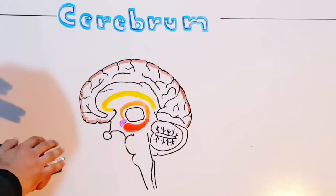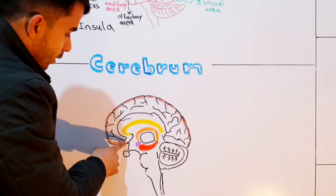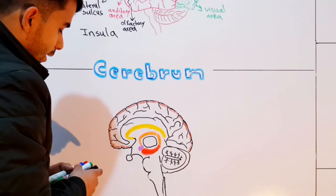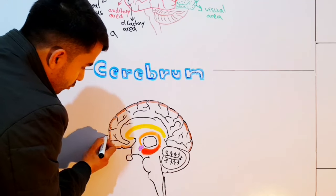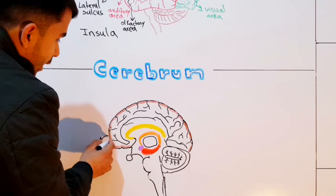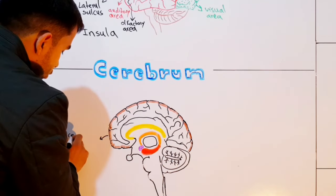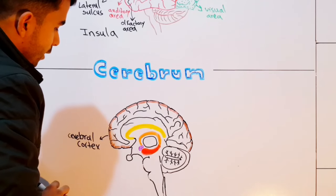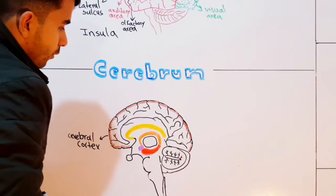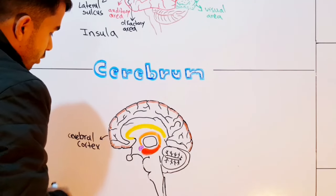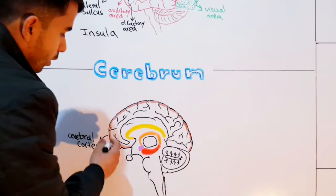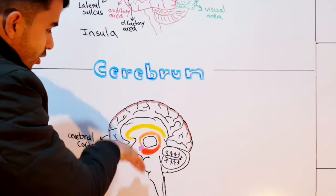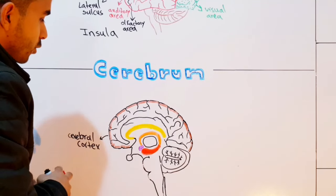When you look at the cerebral hemisphere from a sagittal section, you can see gray shaded areas at the periphery — these are gray matter and they make up the cortex of the cerebral hemisphere, which is called the cerebral cortex. Beneath the cerebral cortex is a dense tissue of white matter called the cerebral white matter.